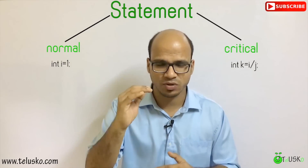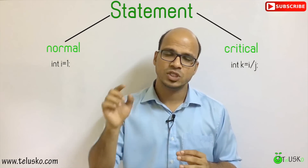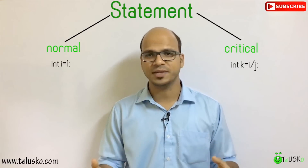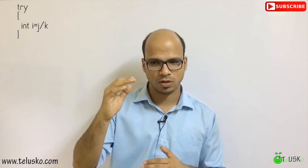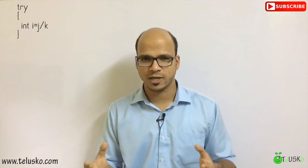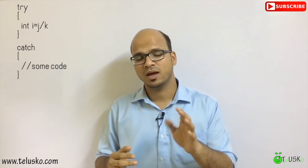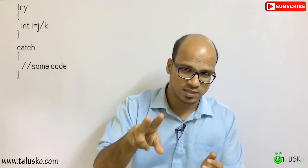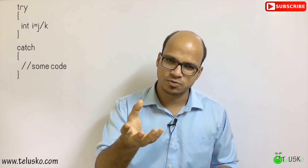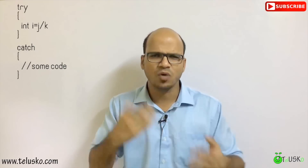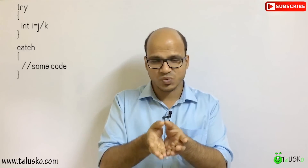Whenever you have critical statements, always write them inside a block. If that block generates any kind of exception, you have to handle it. For that, we use a try block. So we have this critical statement inside a try block. If any exception occurs, execution will go to catch. For example, 'int k = i / j' where j is 0 will throw an exception — Java will create an object of that exception and throw it. You have to catch it using a catch block. So try will throw it and catch will catch it.